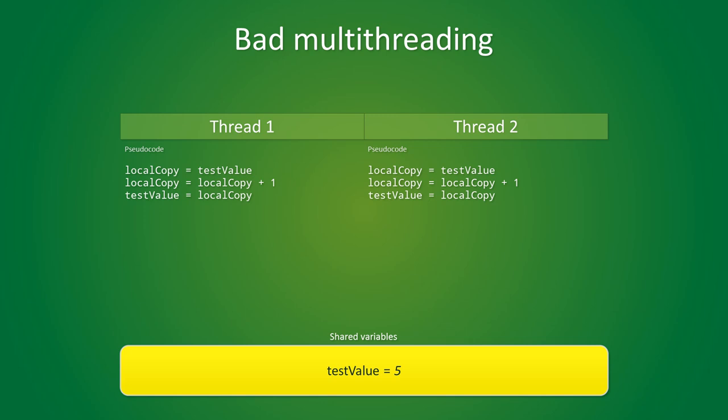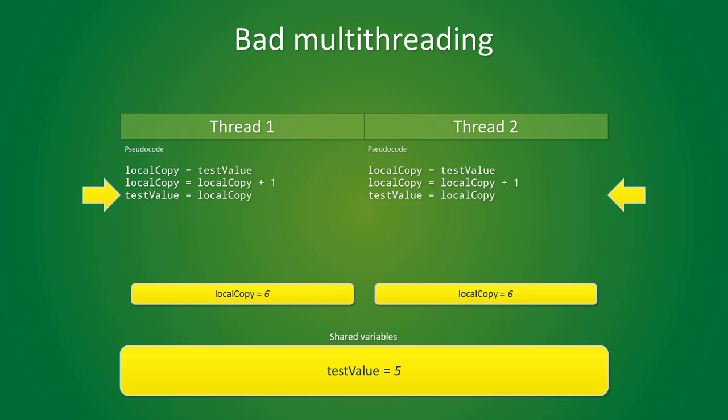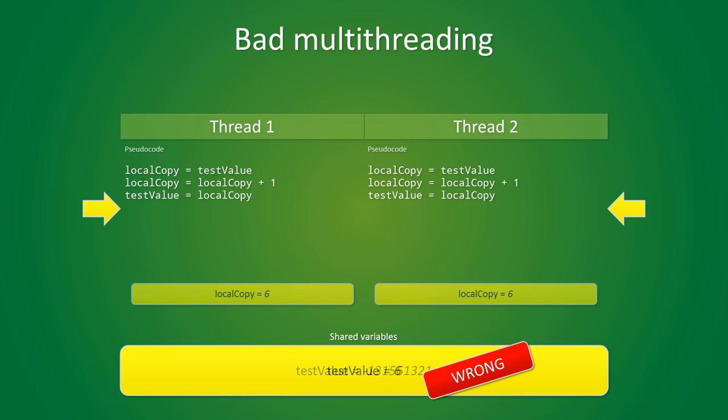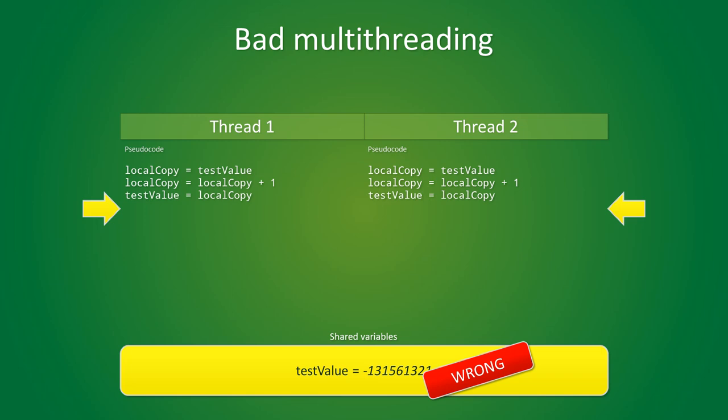Consider this scenario. Thread 1 gets its local copy into a register, thread 2 does too. They both increment their register value and then try to write their register value back to memory. Regardless of which thread writes their value to memory first, the test value will always be 6 and not 7, which is what we would have expected. In the absolute worst case, your test value could become corrupted and then all bets are off. Long story short, multiple threads shouldn't be writing to the same variable at the same time because that causes problems.